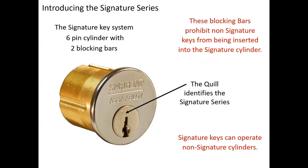Here's our signature series cylinder. You can see a mortise cylinder shown here, and just to the left of the keyway we identify with a quill or feather — that's our logo for the product. It'll be on every cylinder and every key. These are always six pin and include an additional shear line. The good thing about signature is the signature key — which is higher security — would also operate a non-signature cylinder. So you can mix a higher security cylinder on your perimeter doors and use a non-signature cylinder at a cost savings on room closets, and have the same master key operate both doors.